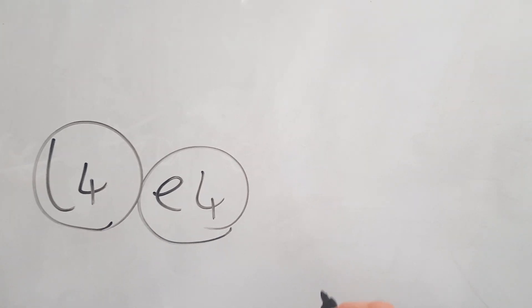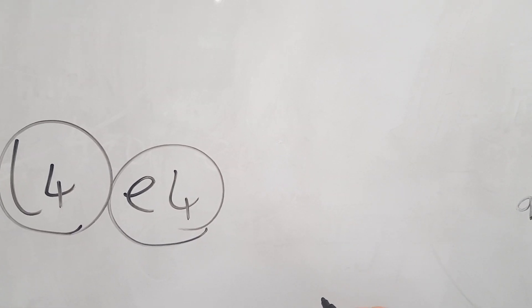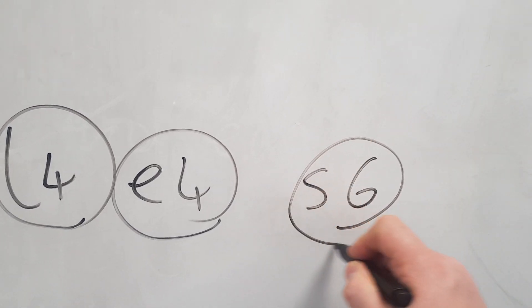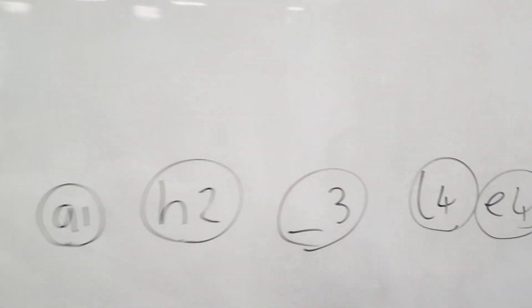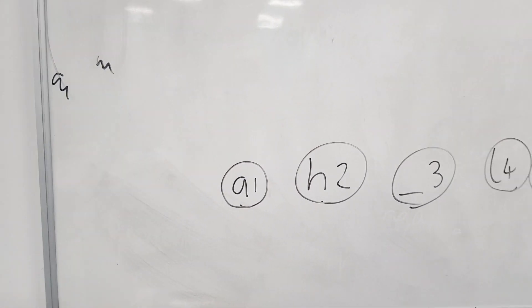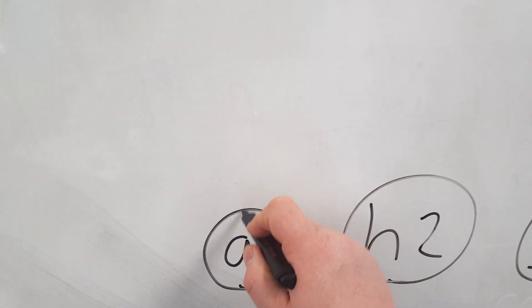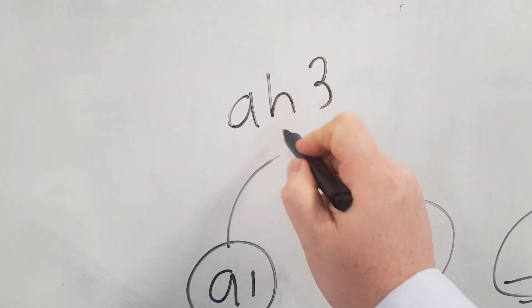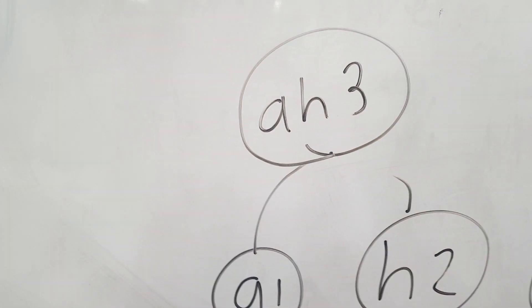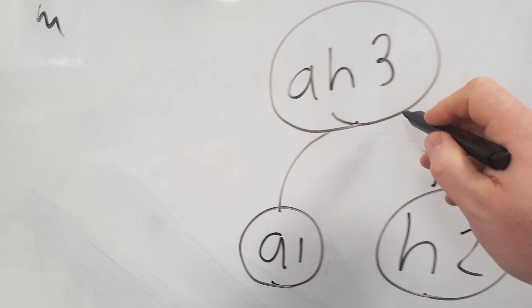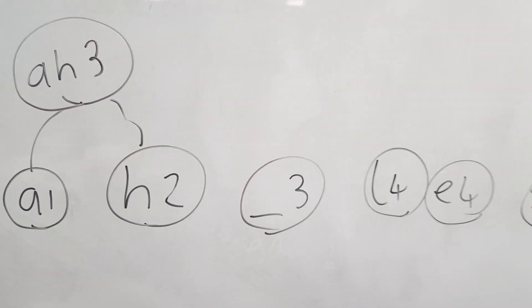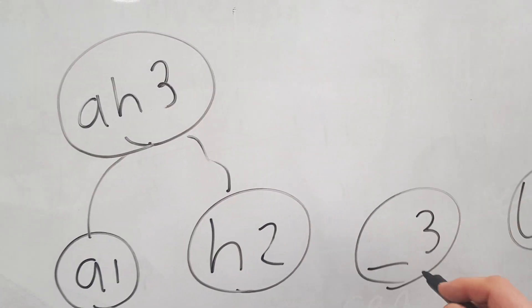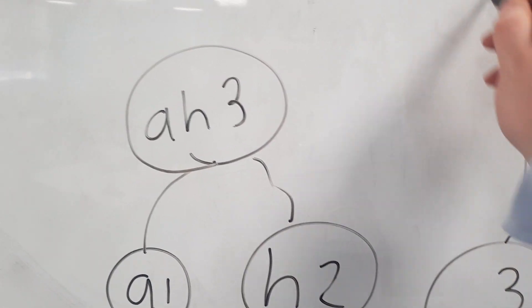And then we've got S which is six. So what we do is we start to combine nodes now. So we go A and H equals three. Now we need to look at the next two lowest, which are AH three and space three, so we combine those to space-AH six.